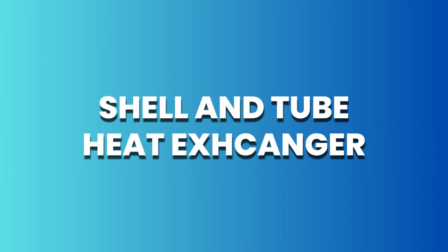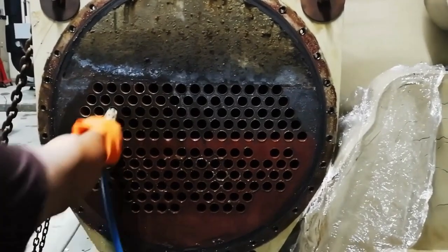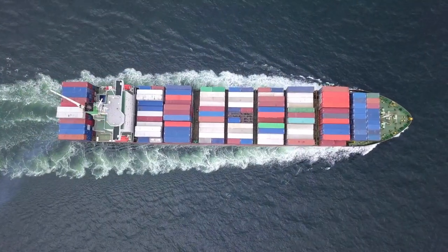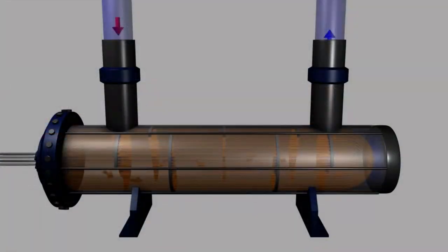Shell and Tube Type Heat Exchanger: The shell and tube type heat exchanger is one of the most commonly used types in the maritime industry. It consists of four main components: the shell, the tube bundle, the baffle plate, and the tube sheets.